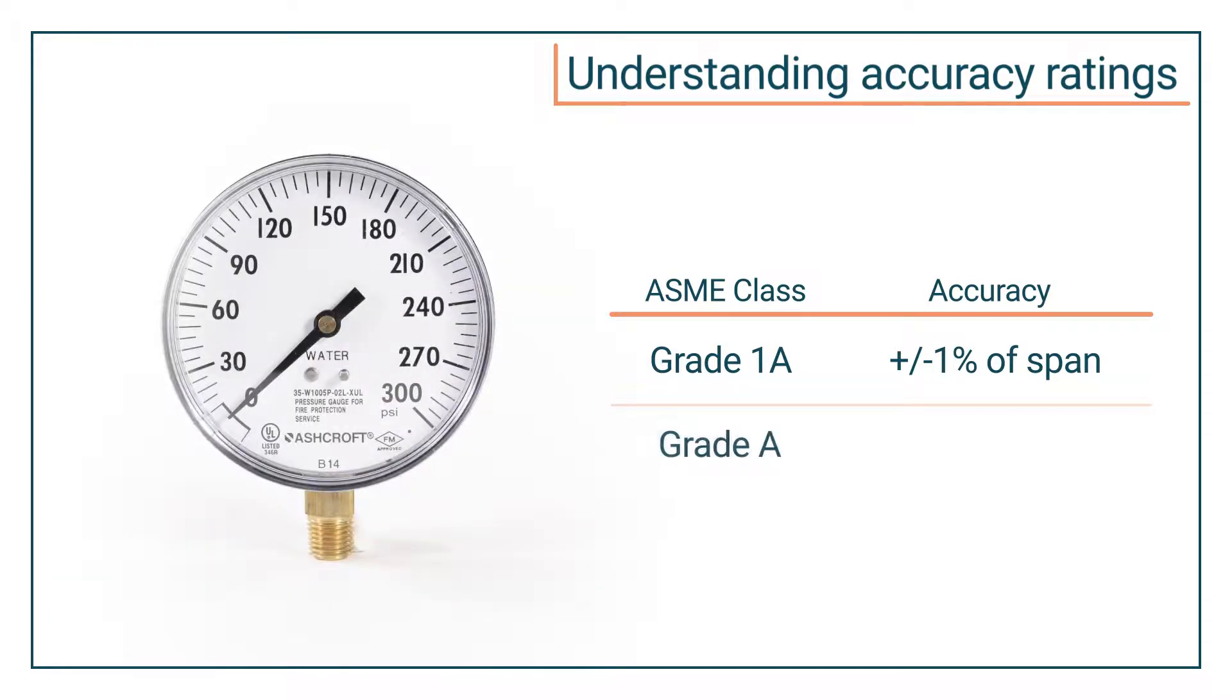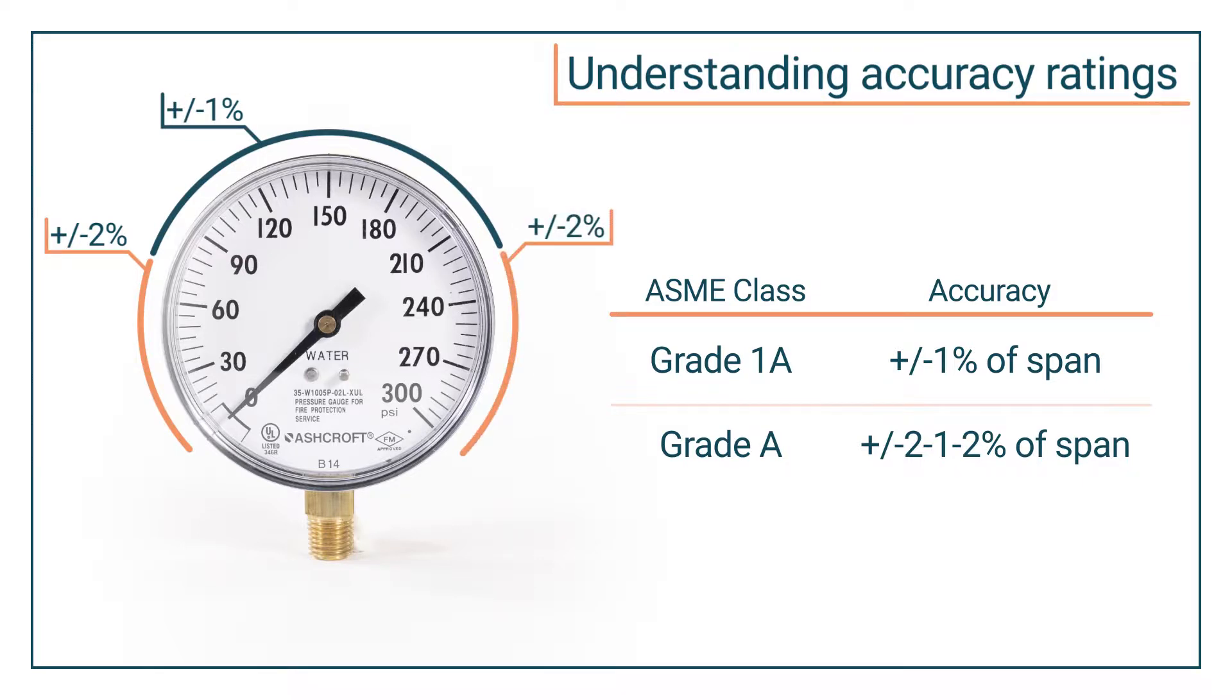Varying range gauges use a series of three numbers, like plus or minus 2, 1, and 2%. This means the first quarter of the range will have an accuracy of plus or minus 2%. The middle half will improve to be plus or minus 1%, and the last quarter range will have an accuracy of plus or minus 2%. You can see how the ASME class relates to the accuracy of the gauge.